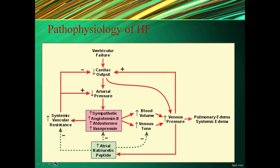The pathophysiology of heart failure: ventricular failure leads to decreased cardiac output and decreased arterial pressure, which activates the sympathetic system along with release of angiotensin 2, aldosterone, and vasopressin. This leads to increased blood volume and venous tone, increasing venous pressure, which leads to pulmonary and systemic edema. This elevated venous pressure also triggers release of atrial natriuretic peptide, which acts as a counterbalancing product in the vicious cycle.